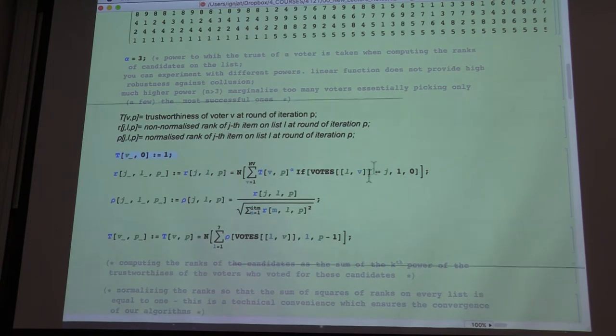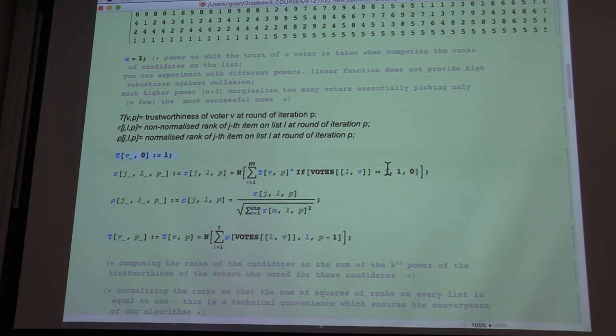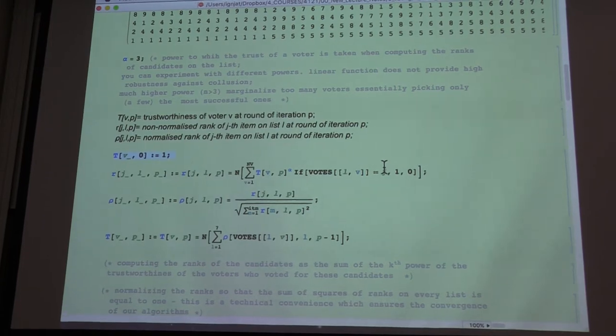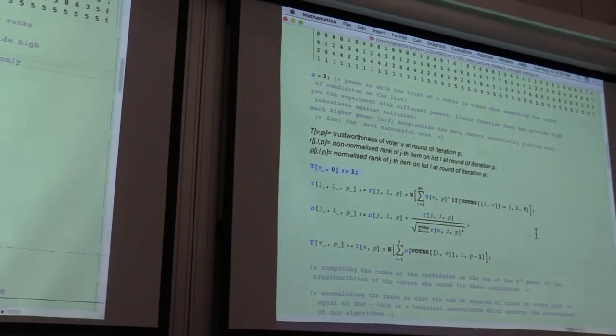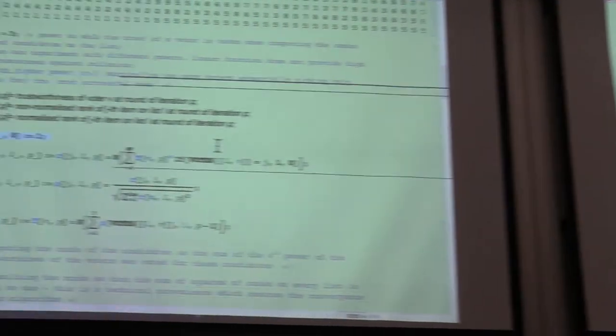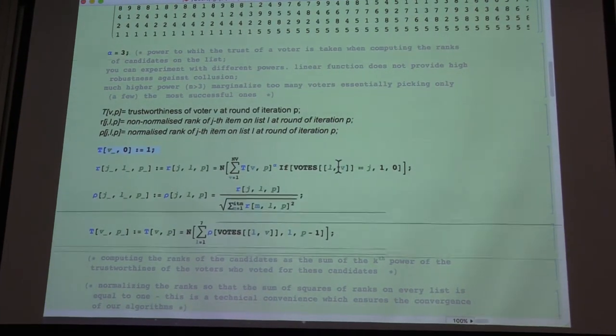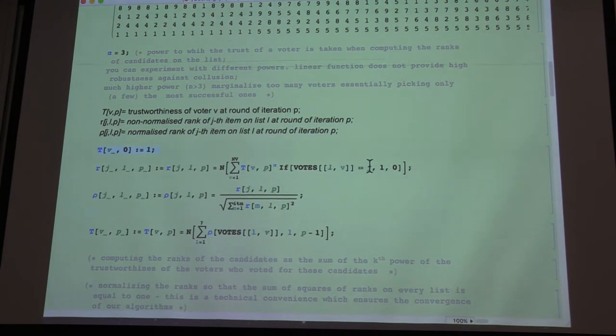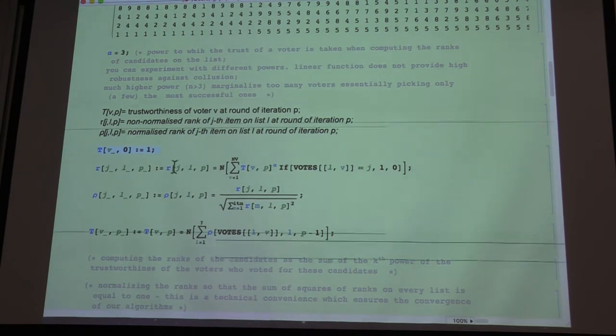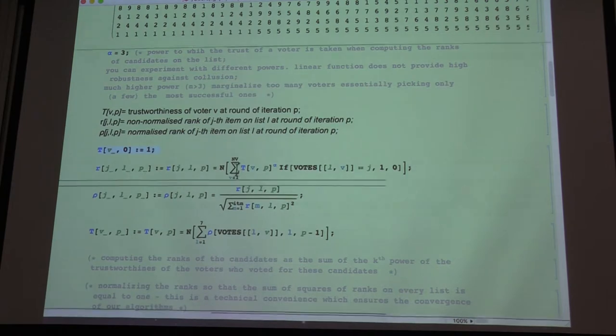that voted for item j on the list l. So on the list l, if the voter has voted for item j, then rj will be incremented by this value.